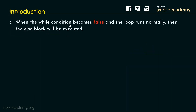When the while condition becomes false and the loop runs normally, the else block will be executed. In previous presentations, we understood what a while loop is and how it works. While loop allows us to execute a piece of code based on some condition. If the condition satisfies, the loop executes. If the condition becomes false, the loop terminates, and any statement outside the while loop will be executed.